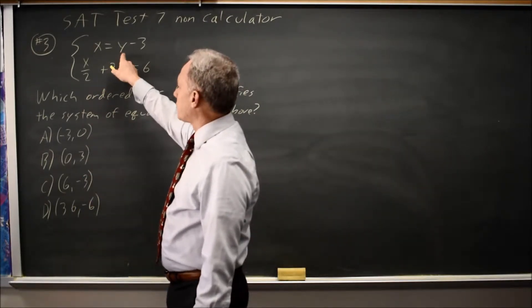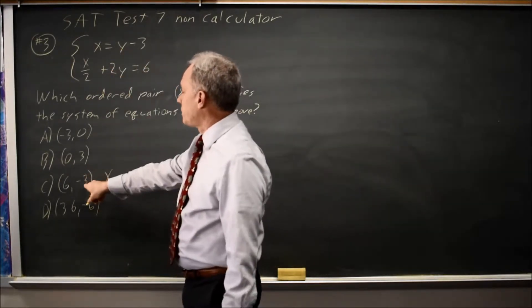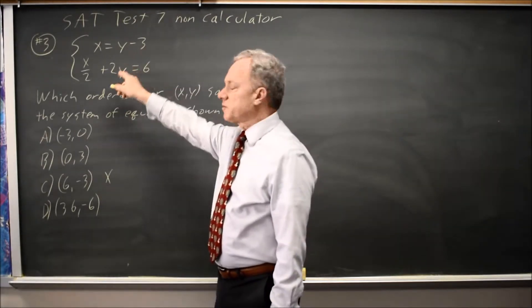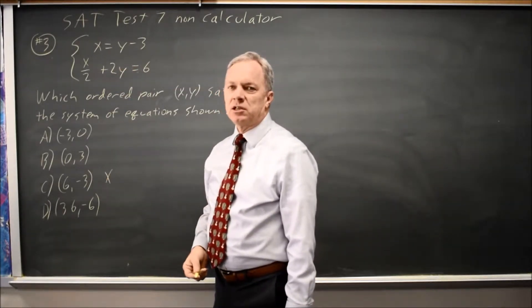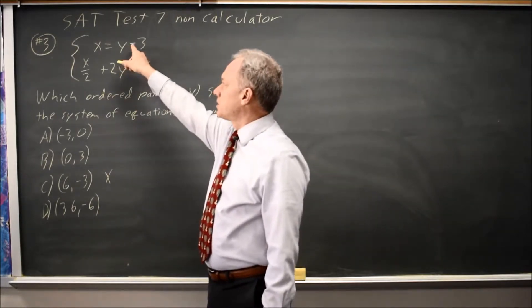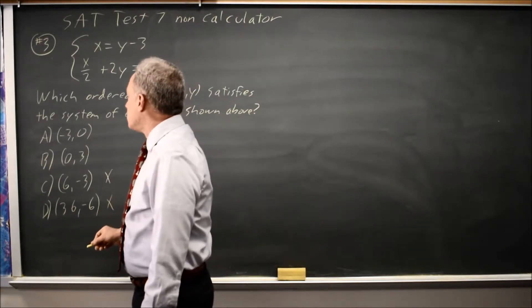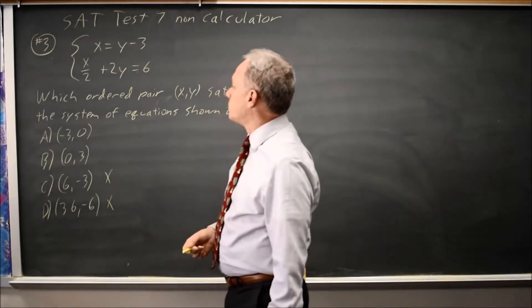Is 6 equal to negative 3 minus 3? No. Negative 3 minus 3, the y value here, minus 3 would be negative 6, which is not positive 6, so choice C is wrong. The y value here, negative 6, minus 3 is negative 9. That's not equal to 36, so choice D is wrong.